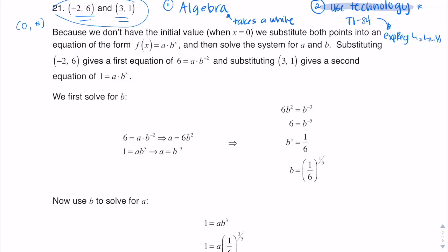We're back. If I want to do this the algebra way, we're going to plug in both ordered pairs to our exponential model and see what we can do in terms of solving for a and b. Because we have two ordered pairs, we will ultimately get two equations. As long as we have two equations, we can solve for a and b since we have two variables — with two variables, we need two equations. We can make a system of equations and use substitution, elimination, or graphing. I'm going to wind up using substitution.